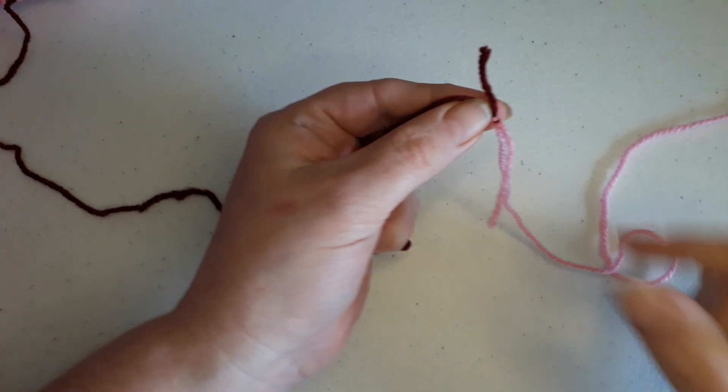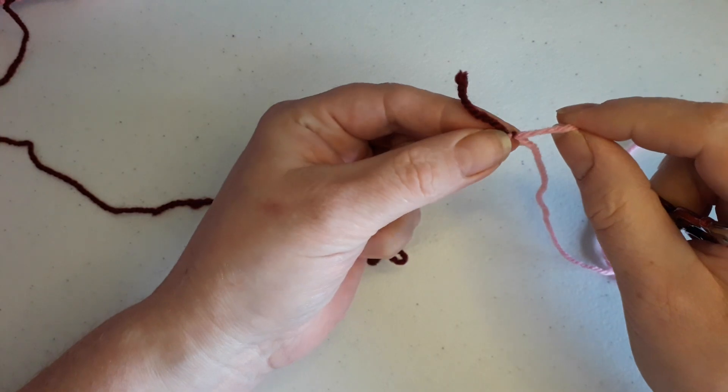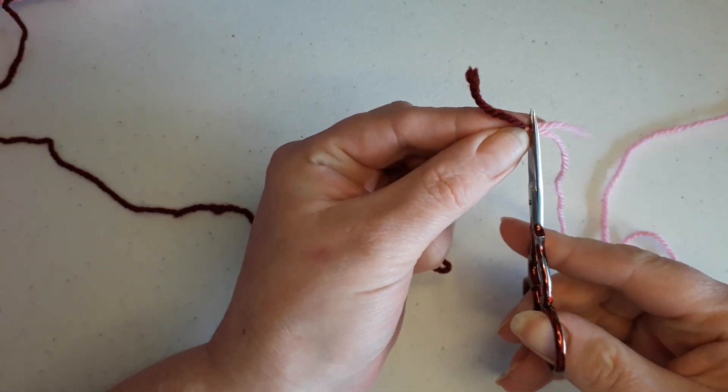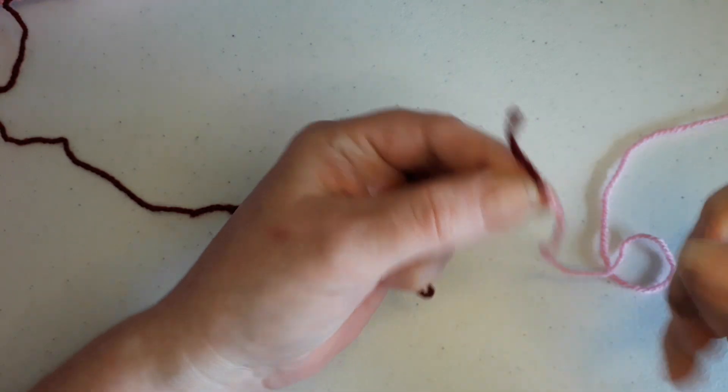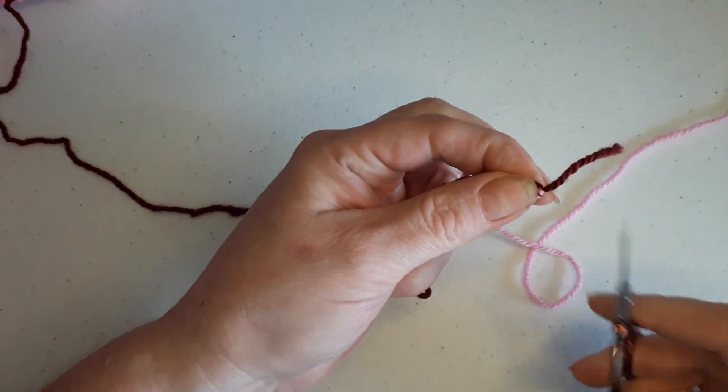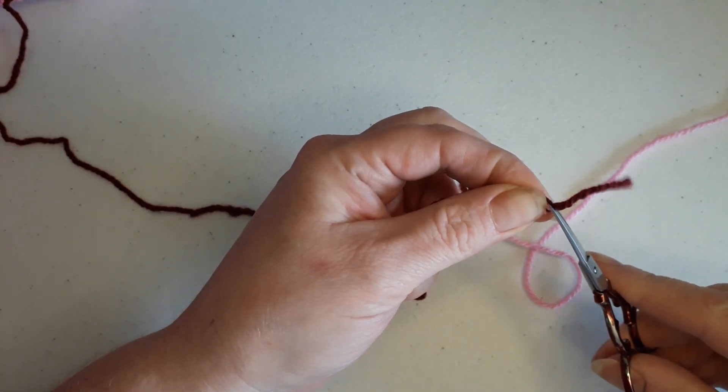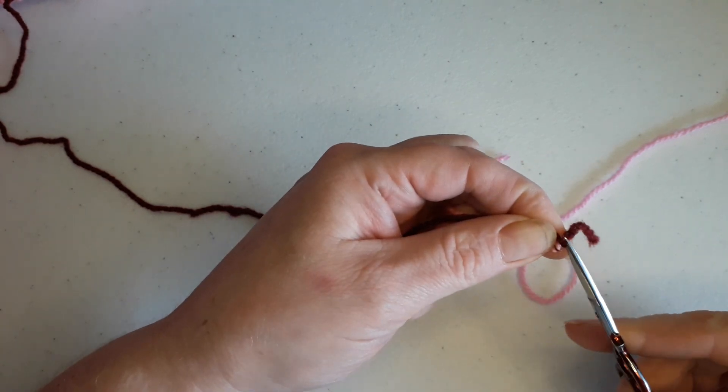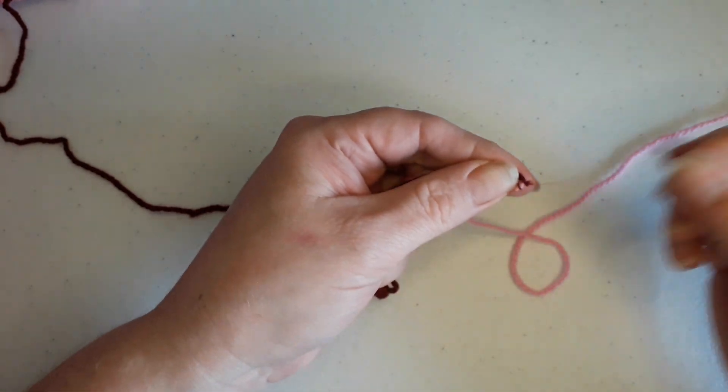It's so interesting—you can cut those tails really almost up to the knot so that you cannot see any tails whatsoever. Just make sure you're not cutting the knot itself or another yarn.